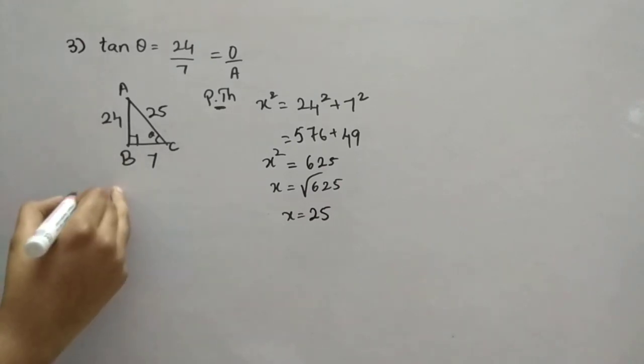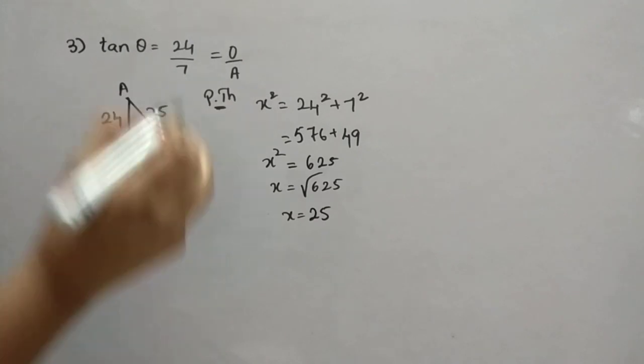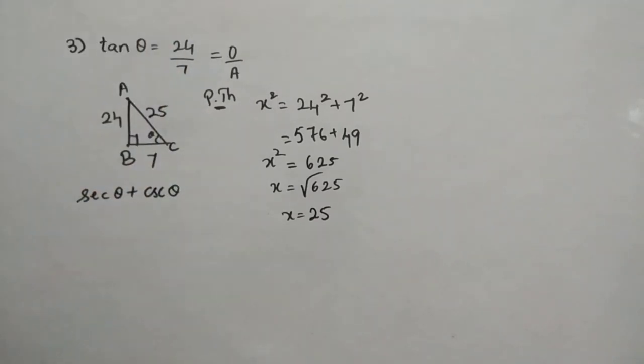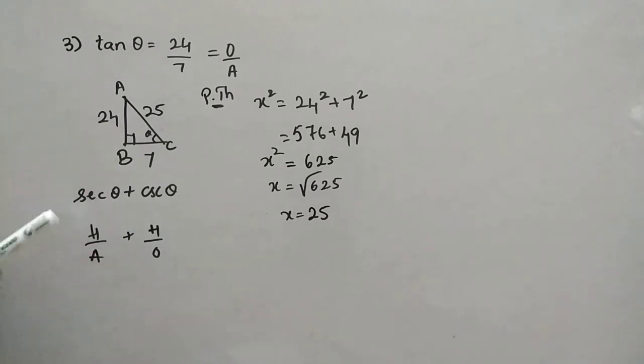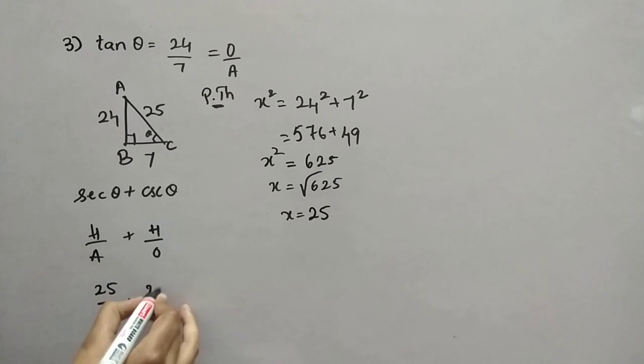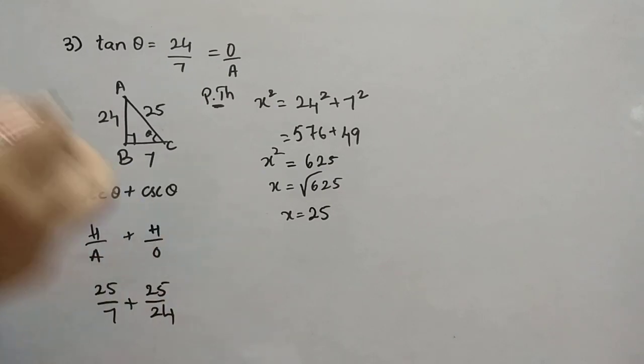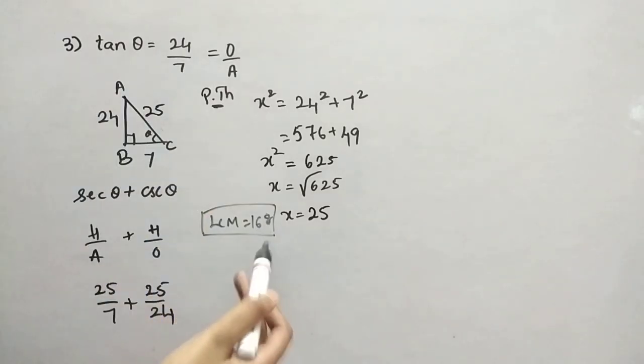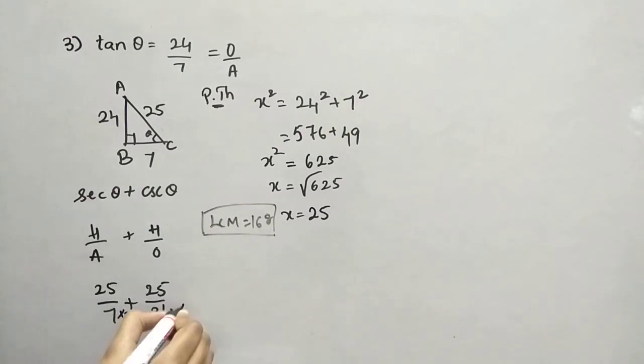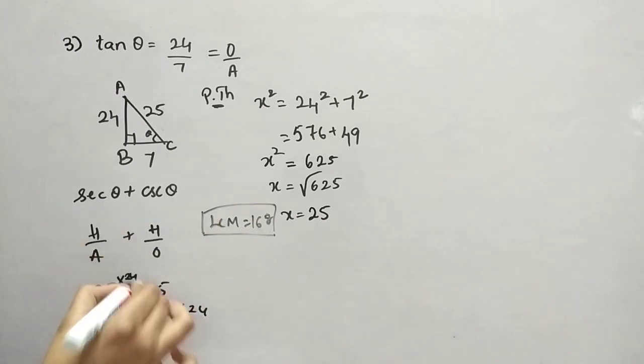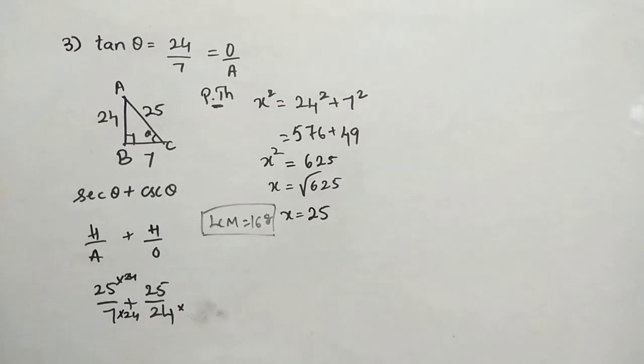Now, what it is? Secant square, secant theta plus cosecant theta. Now, first write the formulas. So this is the formulas, right? Now, we have to put it there. So, 27, sorry, hypotenuse is 25, 25 by adjacent is 7 plus hypotenuse 25, opposite is 24. Now, we will add this. So, LCM is 168. Now, we will find, for this, we will do it. So, we have to multiply 24 to numerator and denominator to get 168. Not here. Here, if you multiply 7. One second. Fine. Now, we have to solve this.